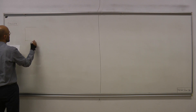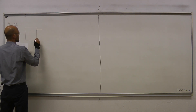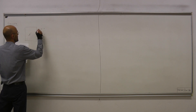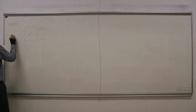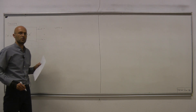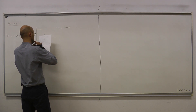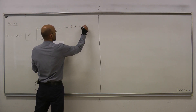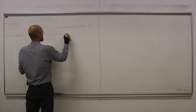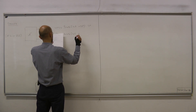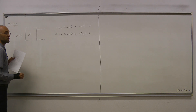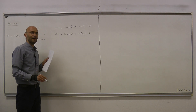Consider this one-port that's part of a circuit in sinusoidal steady state, with terminal voltage V and current I. N is in sinusoidal steady state. Suppose the voltage across the terminals is measured to be 3 cos(4t + 30°) volts, and I(t) = 6 cos(4t + θI) amps. We will consider two cases depending on the value of θI.